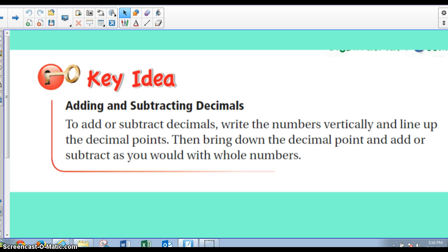The key idea for adding and subtracting decimals, and I would like you to write this down, is to add or subtract decimals, you have to write the numbers vertically and line up the decimal points. Then bring down the decimal point and add or subtract as you would with whole numbers. That is a really key point, so please pause this, write it in your notes, and come back.